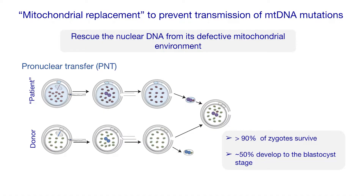Some years ago we began collaborating with Doug Turnbull on this. The concept was could we replace — it has become known as mitochondrial replacement, though that's a little bit misleading. What we in fact do is switch the nuclear genome to a fresh cytoplasm from an unaffected donor. The flavour of this that we do is pronuclear transfer: we fertilise the egg of the patient and the donor, let the pronuclei appear, and then transplant these pronuclei into the enucleated egg from the donor. So you have a reconstructed zygote consisting of the nuclear DNA of the patient and her husband, and largely the mitochondrial DNA of the unaffected donor.